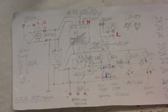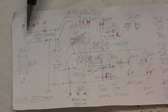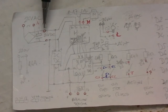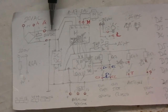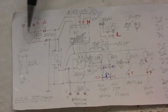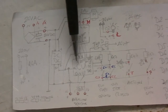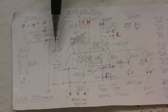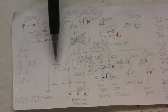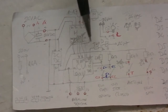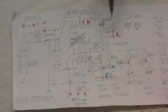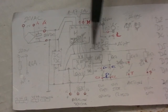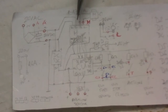First of all we need the AC-to-DC converter. Here you can see a bridge rectifier with a capacitor that will provide 24 volt DC for the motor. We also need another power supply for the control unit. So this is a DC-to-DC converter that will provide 5 volts for the control unit.